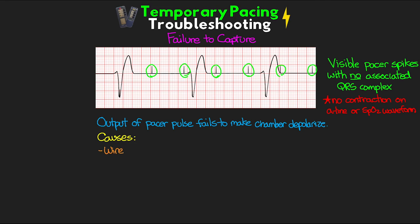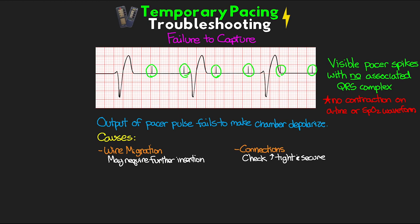Recognizing failure to capture isn't that difficult, but understanding the causes so you can fix it is what's important. First, wire migration — the wire may have moved from the proper placement and may require the provider to insert it a bit more. Second, check your connections — ensure they're tight and secure, because loose connections may prevent delivery of the full electrical energy set at the output. Third, the output itself might not be high enough, so increase the milliamps until you achieve capture, then determine the stimulation threshold and set to a two-to-one safety margin.